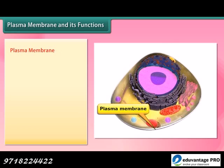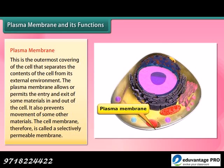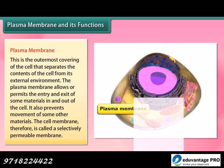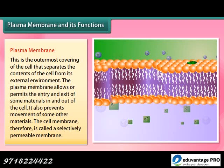Plasma membrane: This is the outermost covering of the cell that separates the contents of the cell from its external environment. The plasma membrane allows or permits the entry or exit of some materials in and out of the cell. It also prevents movement of some other materials. The cell membrane is therefore called a selectively permeable membrane.